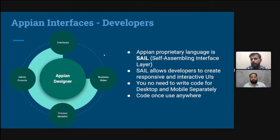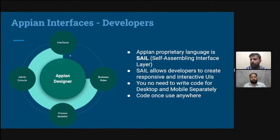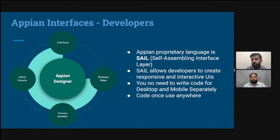One important thing — Appian's proprietary language is SAIL, which stands for Self-Assembling Interface Layer. Everything you write in Appian — whether creating interfaces or writing logic — uses SAIL. SAIL allows developers to create responsive and interactive applications. You develop code once and can use it anywhere — mobile, laptop, desktop — without writing different code for different systems. It is already responsive by design.